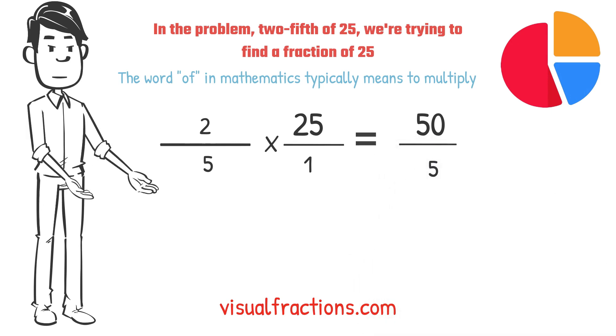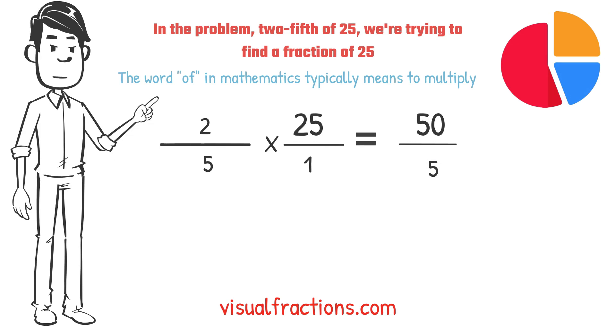Next, multiply the denominators: 1 times 5 equals 5. We now have a new fraction, 50 fifths.